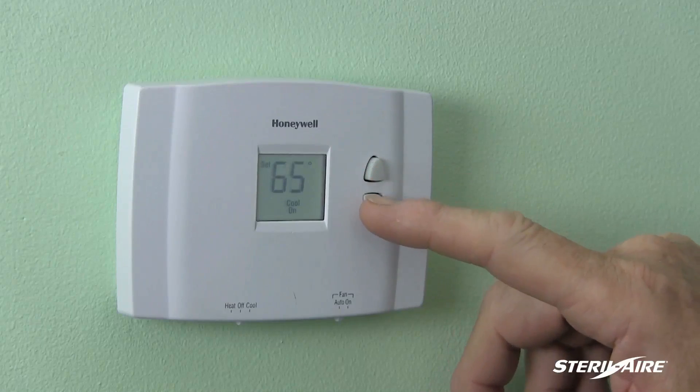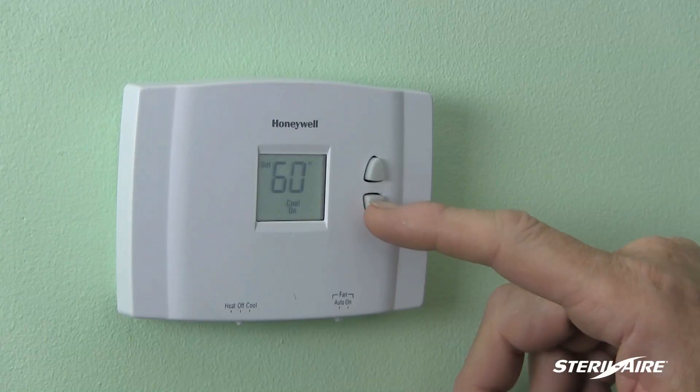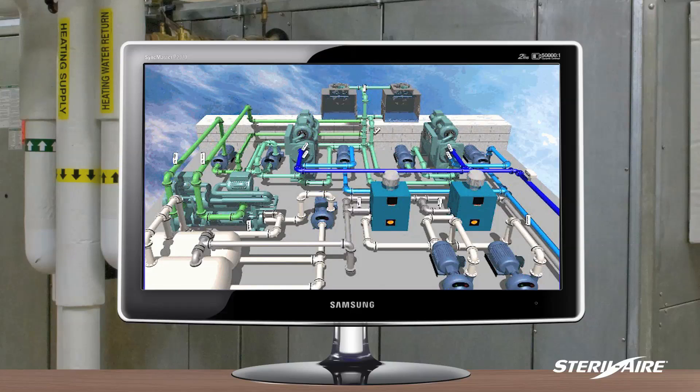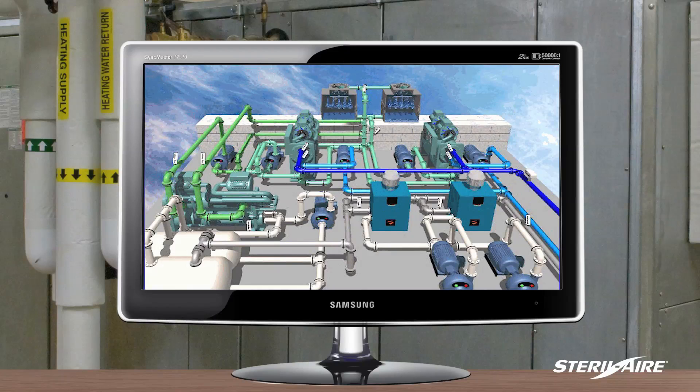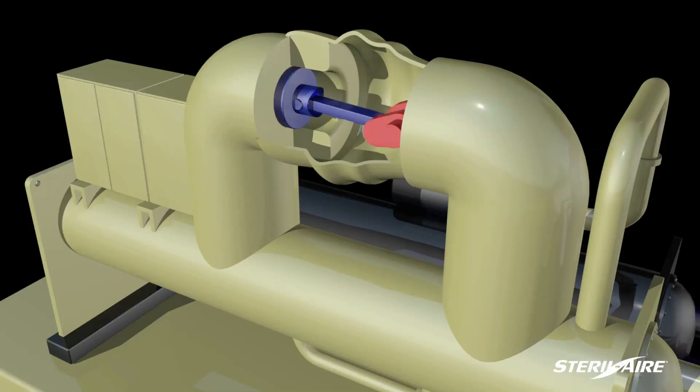To achieve the desired thermal comfort, either the occupants alter the thermostats, or the maintenance department adjusts the chiller set point. In either case, this increases the electrical consumption of the chiller and pumps.